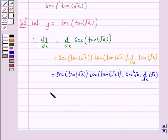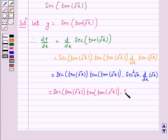Hence dy by dx equals secant of tan of root x into secant square root x. Now the derivative of root x is 1 by 2 root x.